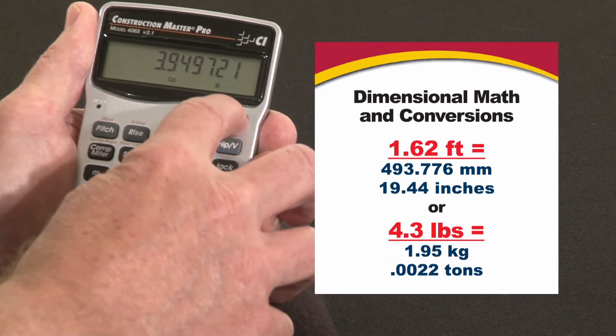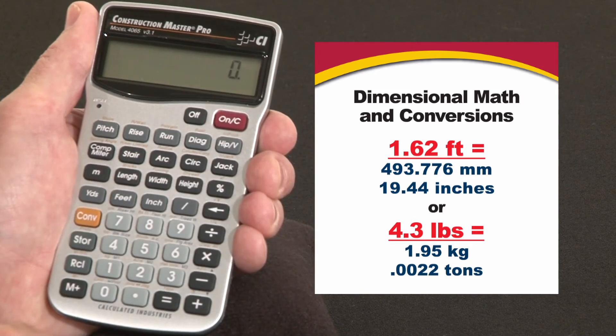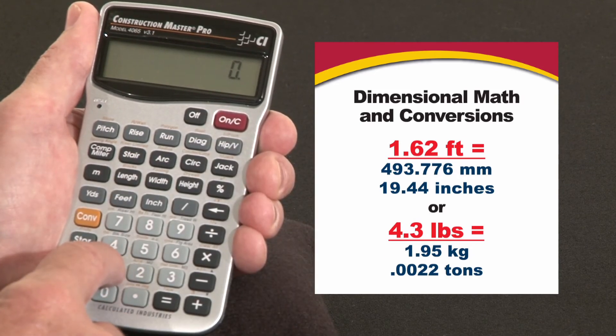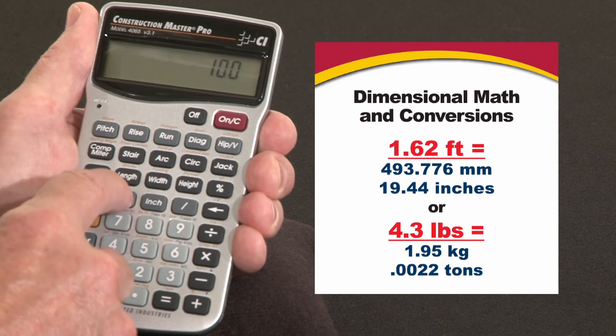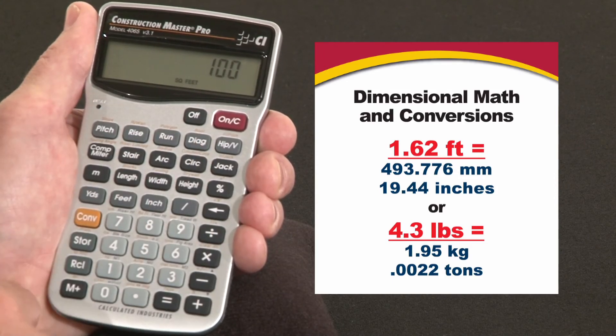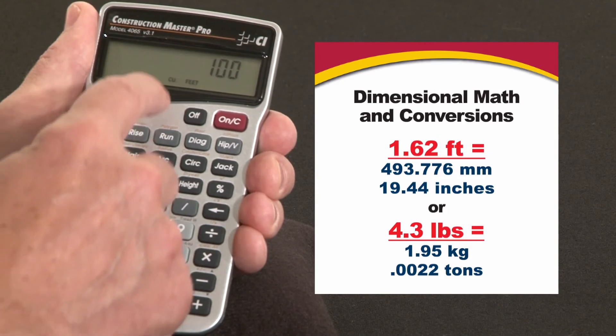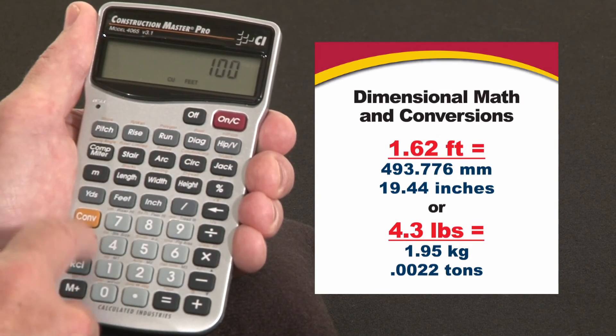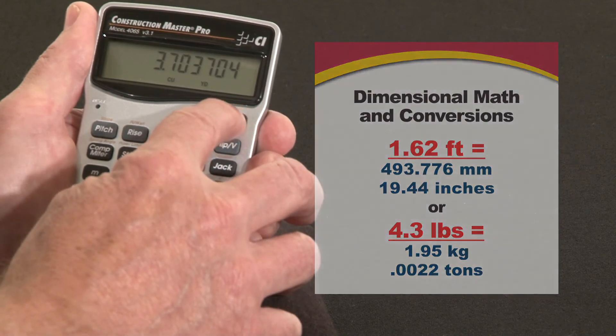Another way to work in square footage and volume is to enter it directly. If you already know the number, you don't have to multiply it. Let's say one hundred square feet. You would hit feet, feet. See it now says square feet. You can now start calculating with that. Or if you press it one more time it goes to cubic feet for cubic volume. And then you can convert that to yards or whatever else you want to do with that.